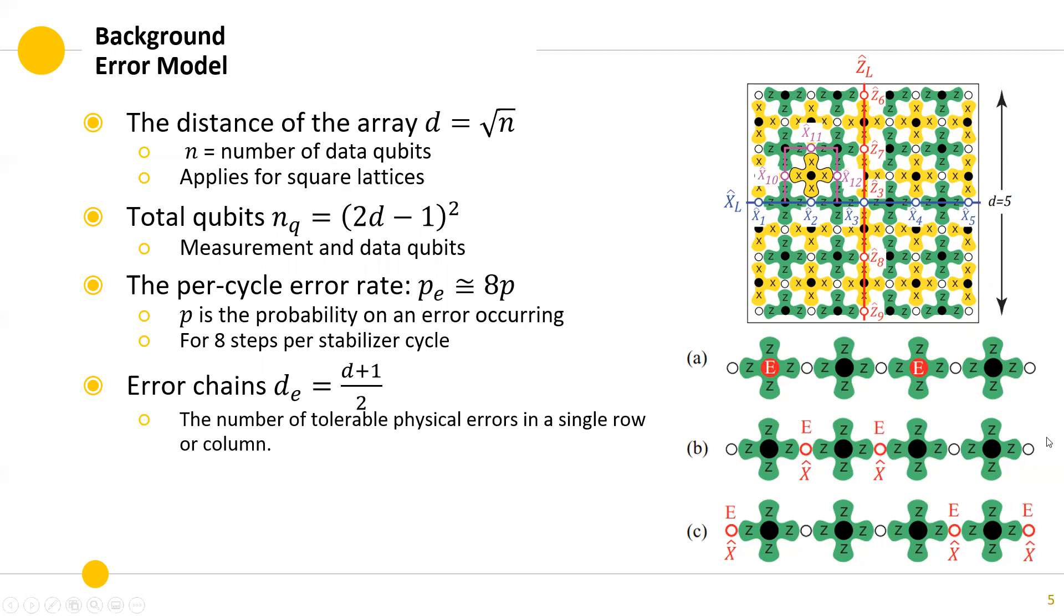Here, we have an example of two errors indicated by syndrome qubits. An indication of two errors can either mean we have two adjacent errors or three far ones in case where D is equal to five. The surface code can correct any number of arbitrary errors as long as all error chains are smaller than DE. Then, statistically, we can arrive at this form for the logical error rate for any arbitrary error.